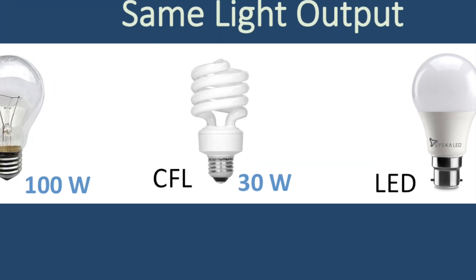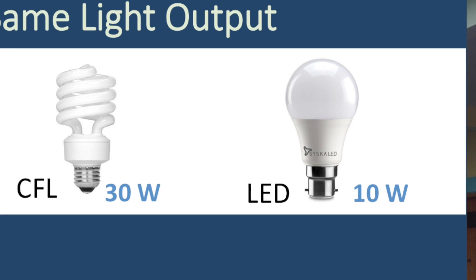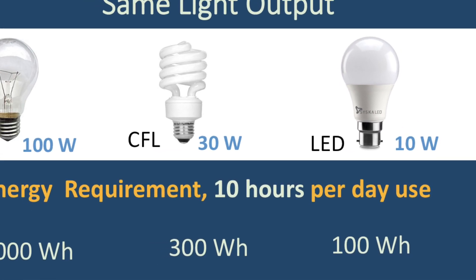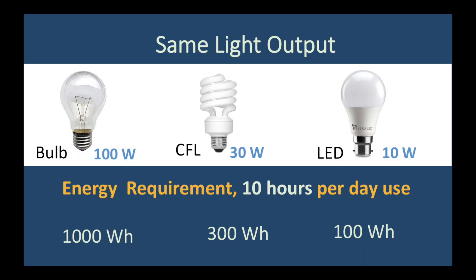For lighting, we must compare apple to apple — the same amount of light output. For the same light output, you may need a 100-watt incandescent bulb, or about 30 watts of CFL, or about 10 watts of LED. If all three are used for 10 hours per day: the incandescent bulb uses 100W × 10h = 1000 watt-hours per day, which is 1 kilowatt-hour, or 1 unit of electricity. That is what is required by the incandescent bulb.